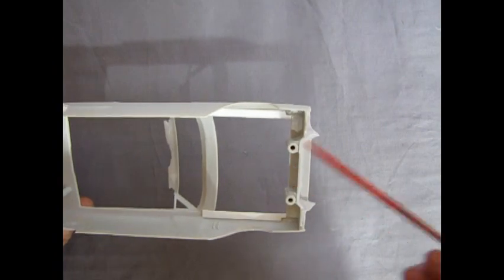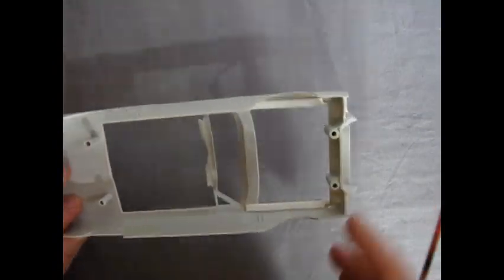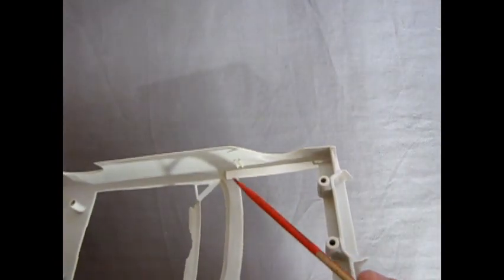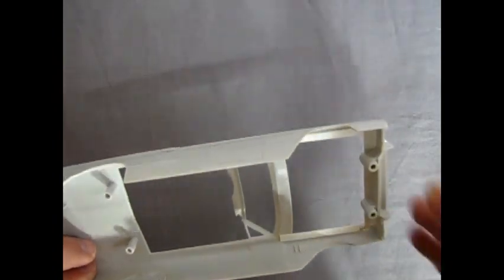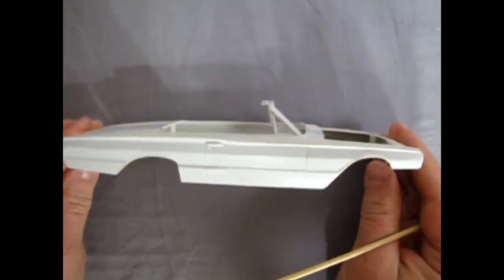So here we have our peg and post style again, up in the front. You could mount this on a slot car chassis if you'd like. There's a little piece in here for a firewall to fit in. More of the posts for the interior. There are some mold marks back here which can be taken out with your number 16 hobby blade.